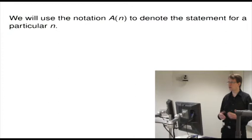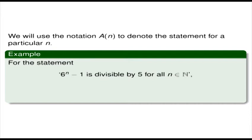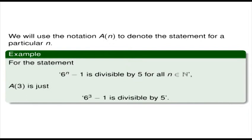Now we need to define our notation. We'll use the notation A(n) to denote the statement for a particular n. We'll call this A-n. For example, the statement '6 to the power of n minus 1 is divisible by 5 for all n in the natural numbers' — well, A3 is just 6 to the power of 3 minus 1 is divisible by 5. And A1000 would be 6 to the power of 1,000 minus 1 is divisible by 5.